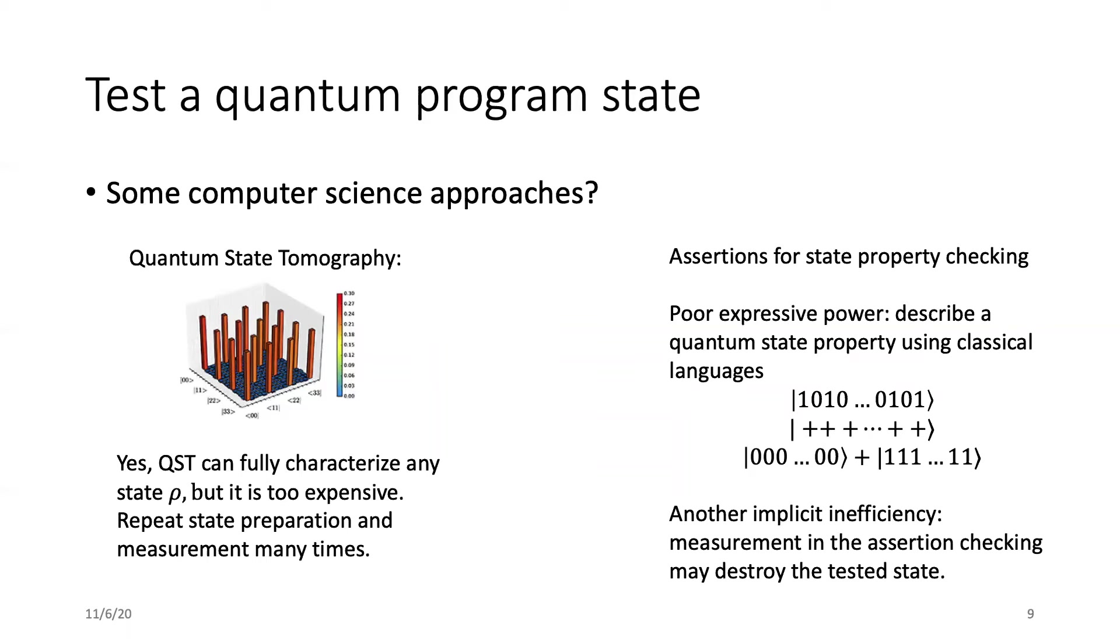The assertion testing can be much simpler when it can be expressed in a classical language. For example, when the predicate says a state is a classical bit string, you can just measure each qubit and see if the output matches. But in this case, the expressive power is very limited. Previous quantum assertions describe a quantum state properly using classical languages and they can only express three types of states. And many complex intermediate states inside the program cannot be asserted.